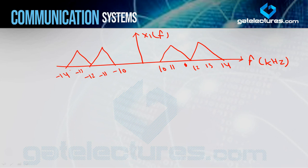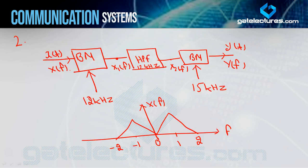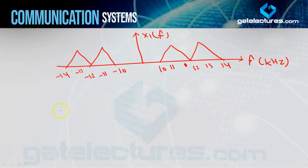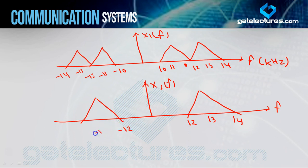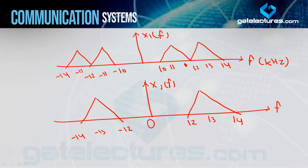X1F is now passed through the high pass filter with cutoff frequency 12 kHz. All frequencies at or above 12 kHz pass, all below 12 kHz are rejected. So X2F contains only the components: 12, 13, 14 kHz on the positive side, and -12, -13, -14 kHz on the negative side.